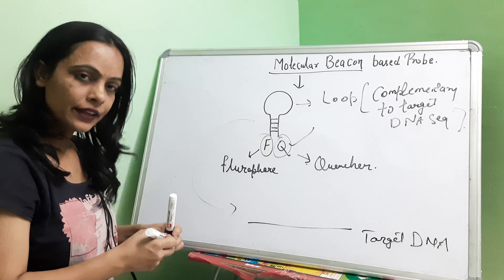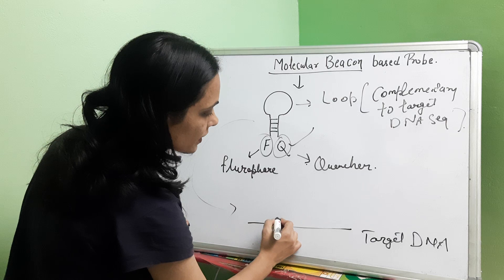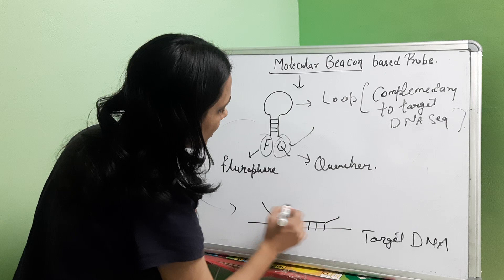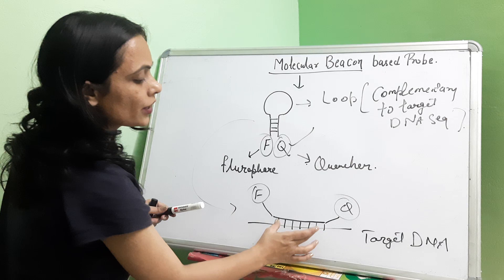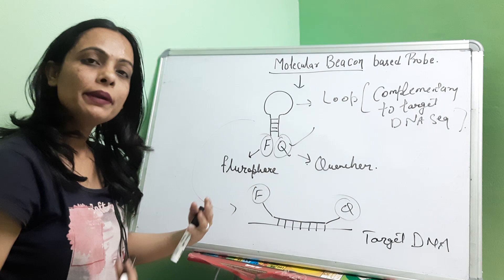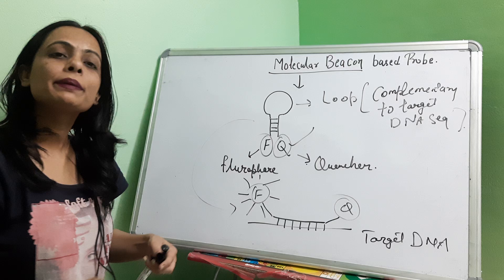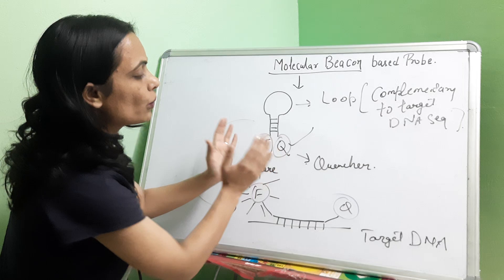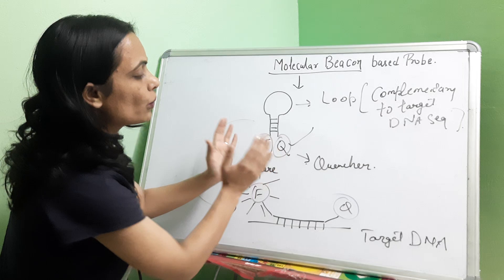When we add the molecular beacon to the PCR mixture, the loop part will be complementary to the target sequence and will attach to it. The fluorophore and quencher are present on either end. The loop structure binds to the complementary target DNA. When the molecular beacon binds to its target DNA, the fluorophore produces fluorescence, and we know that our target DNA has been amplified. When the probe remains in its closed stem-loop structure with fluorophore and quencher close together, no fluorescence is produced.